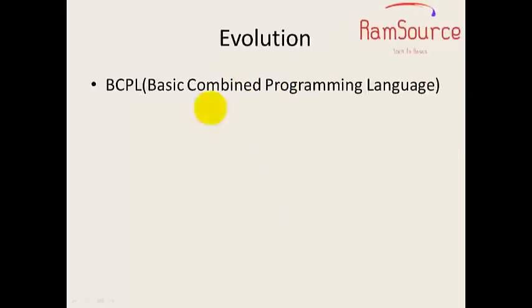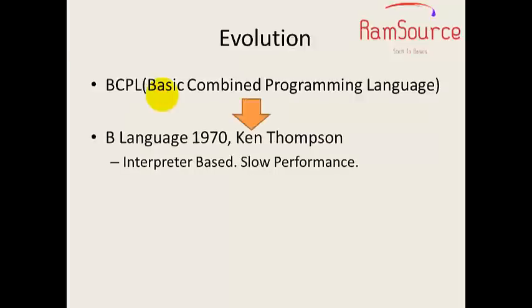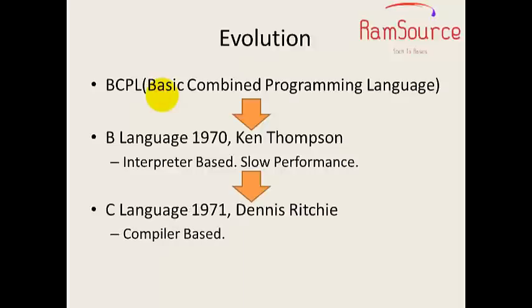History of evolution: In mid 60's, BCPL - Basic Combined Programming Language was developed. It was purely interpreter based but very slow in performance. To overcome this drawback, C language was developed in 1971 by Dennis Ritchie. It is compiler based, and the whole program executes in a single stretch.